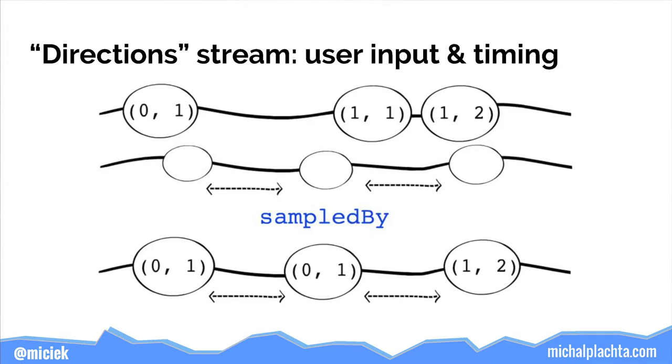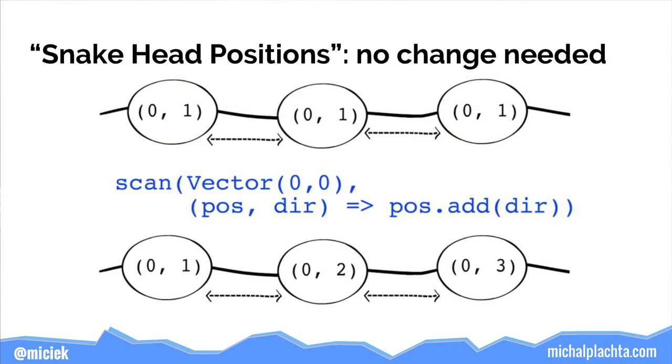The current situation is that every time the user presses a button the direction changes, but the snake doesn't move at all. We need ticks to be used inside the streams so the snake moves even when the player isn't pressing any buttons. That's why we use the sampled-by operator, which takes two streams as input — a value stream and a sampling stream. Each time there is a value in the sampling stream, we take the last value from the value stream and output it. This gives us our real new direction stream.